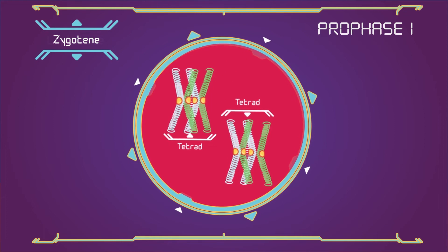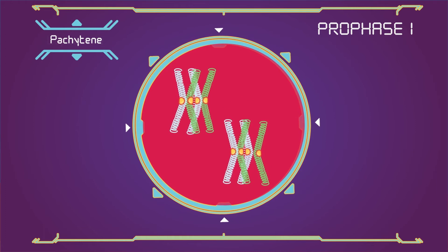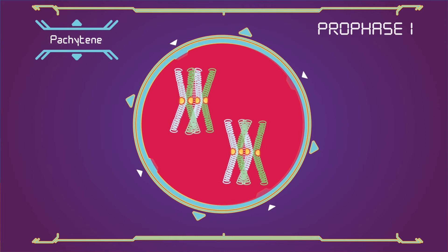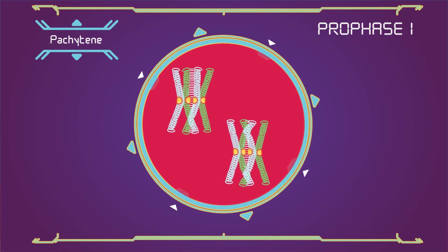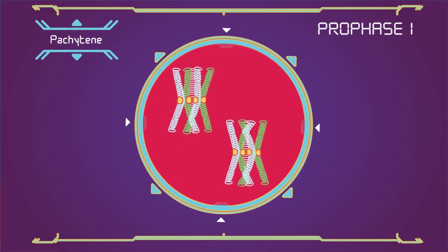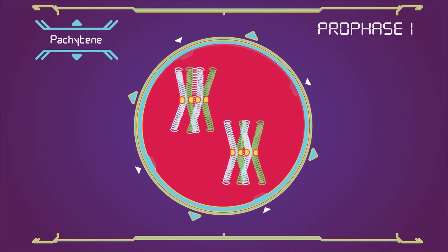Pachytene: this is the stage when homologous recombination, including chromosomal crossover (crossing over), occurs. Non-sister chromatids of homologous chromosomes may exchange segments over regions of homology. At the sites where exchange happens, chiasmata form.